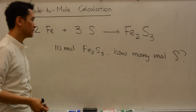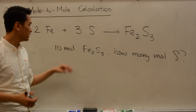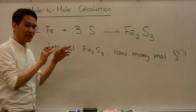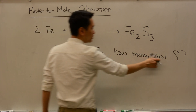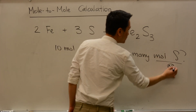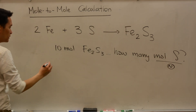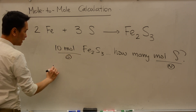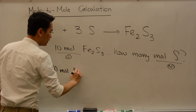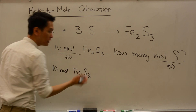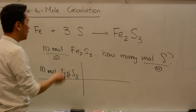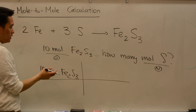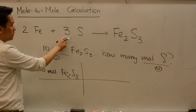How would you solve a problem like this? The given is that you have 10 moles of Fe2S3 — that's your given — and how many moles of sulfur is your needed quantity. You will start with 10 moles of Fe2S3, and look to the balanced chemical equation to know the relationship between the moles of the product and the moles of sulfur.